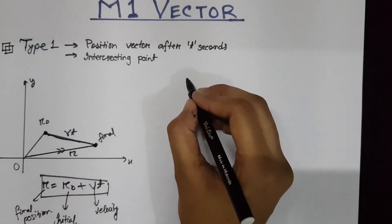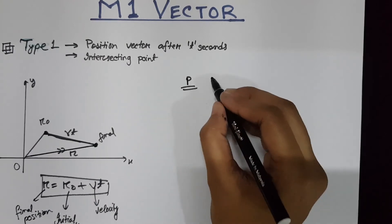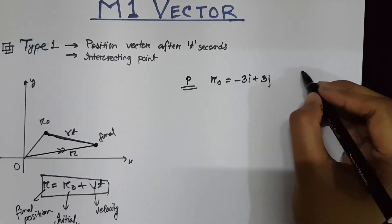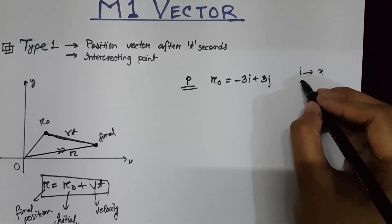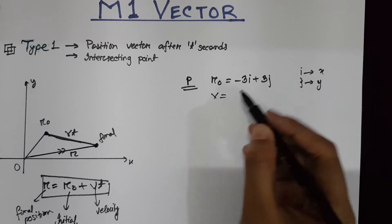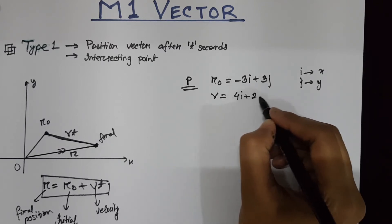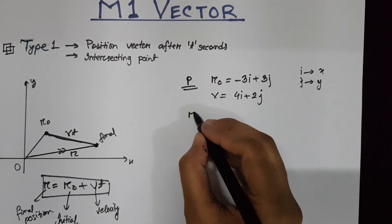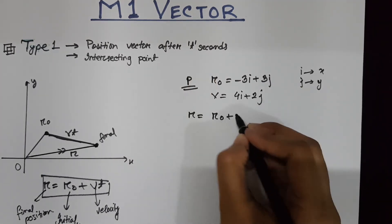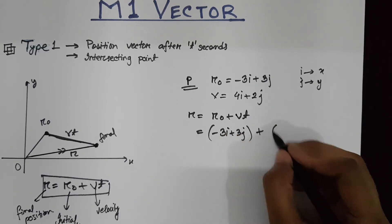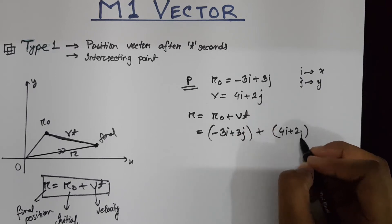Suppose we have a particle P. The initial position of the particle is minus 3i plus 3j, where i denotes the x-axis direction and j represents the y-axis. The particle is moving at a velocity of 4i plus 2j. If the question asks what is the final position of P after t seconds, you need to find R0 + Vt, which gives minus 3i plus 3j plus (4i + 2j) times t.